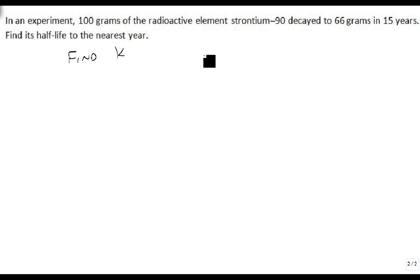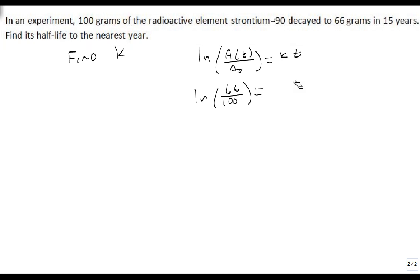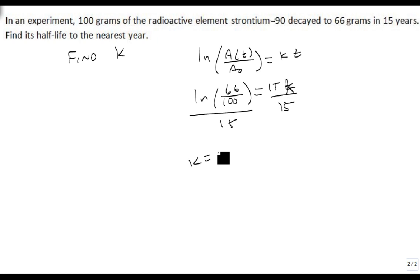And so our formula is the natural log of AT over A-naught equals KT. Well, we know AT in this case is 66, that's over 100, and that's going to be equal to KT, but T is 15, so this is equal to 15K. So we put the 15 on the bottom, and K equals the natural log of 66 over 100, over 15.